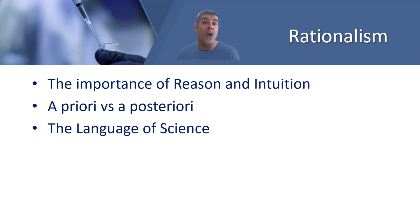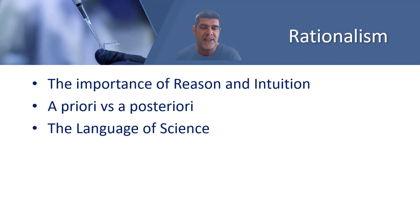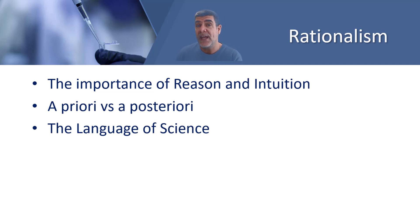Rationalism is based on the principle of a priori reasoning. A priori means 'from earlier'; a posteriori means 'from later.' A priori refers to reasoning where conclusions are reached before evidence is obtained. Reasoning and logical thought are its foundations. Examples of a priori statements include: all bachelors are unmarried, cubes have six sides, today is Friday, and red is a colour.